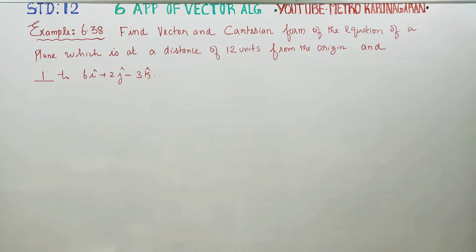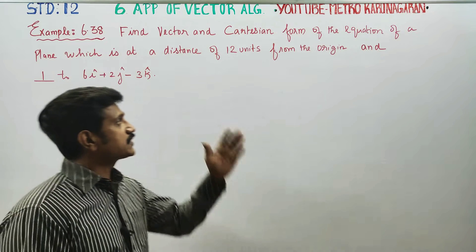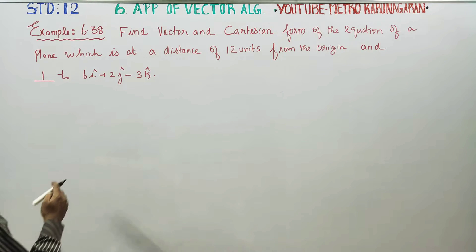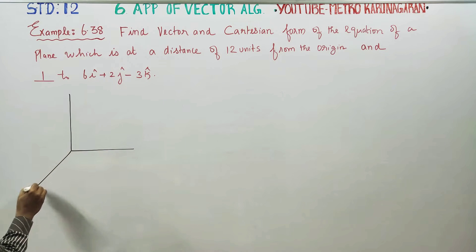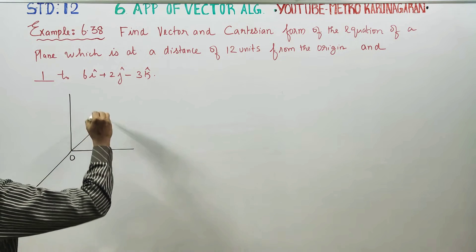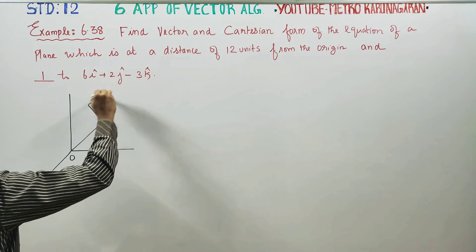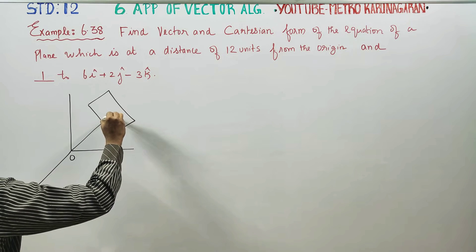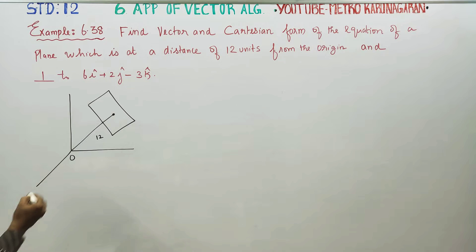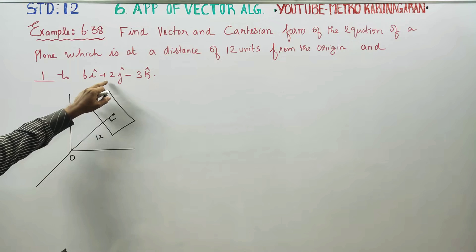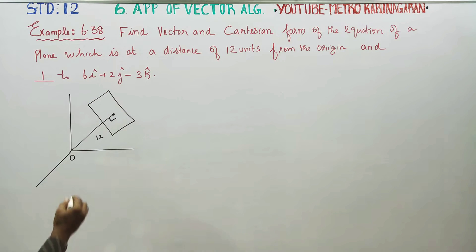Dear 12th standard students, I am Metro Karanagaran. In example 6.38, find the vector equation and Cartesian equation of the plane which is at a distance of 12 units from the origin, and it is perpendicular to 6i + 2j - 3k.